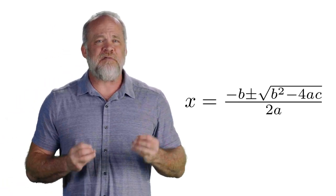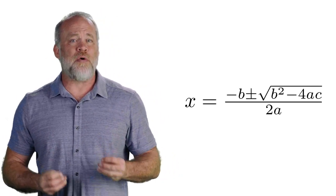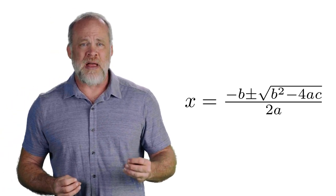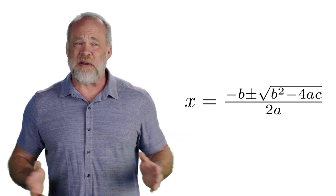The quadratic formula is this: x equals negative b plus or minus the square root of b squared minus 4ac over 2a. Sounds like a mouthful and it sounds like a lot, but it's actually very simple. All we have to do is break it down.